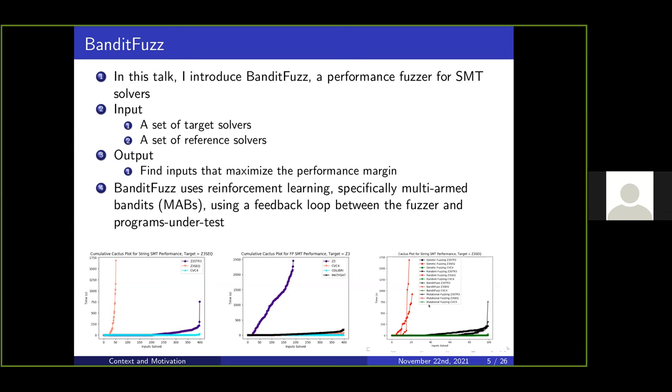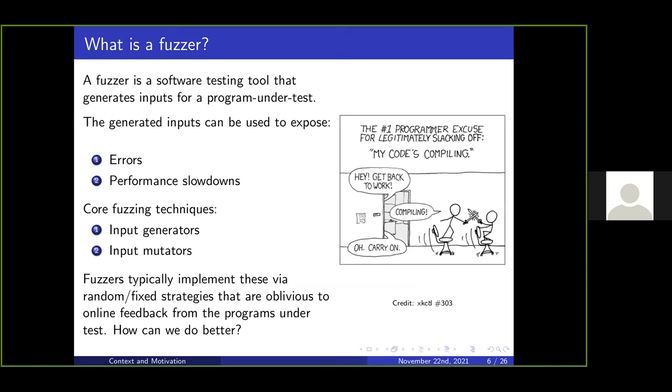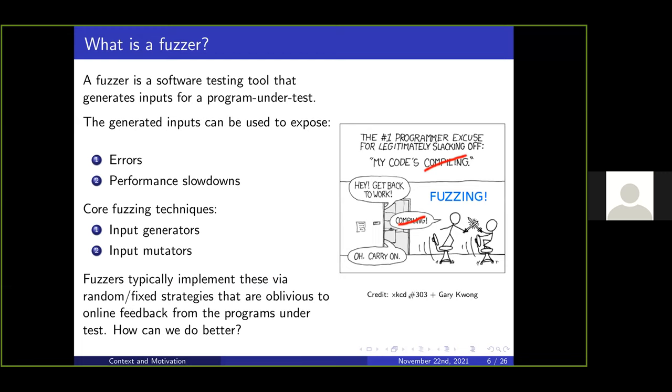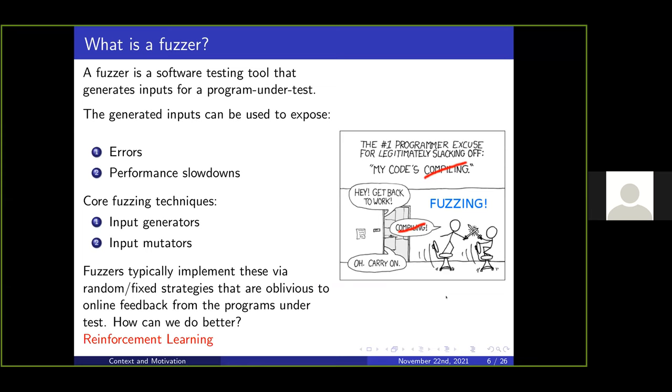So what is a fuzzer? A fuzzer is a software testing tool that generates inputs to a program under test. Fuzzers can target finding inputs that cause errors or slowdowns. They use two common techniques: input generation or mutation. They usually implement these strategies using purely random strategies or fixed strategies, often oblivious to the online feedback that naturally comes when you do software fuzzing. This is something we hope to improve on with reinforcement learning.